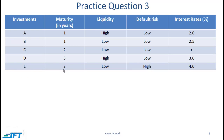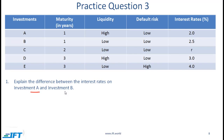Another practice question. We have five different investments with maturities, liquidity, default risk, and an interest rate for each. Why is there a difference between the interest rate on investment A and investment B? They have the same maturity and the same default risk, but interest rates are different — the answer is because of the difference in liquidity. Investment B has lower liquidity, so investors demand a higher return. That higher return happens to be 0.5%, which in this example is the liquidity premium.